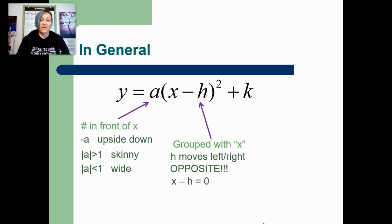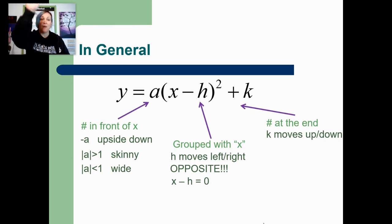Finally, we have the letter K, which will always be added or subtracted at the end of the problem after the square outside of the parentheses. And the letter K lets us know if the parabola moves up or down. So H and K are actually moving where the parabola exists. And then A is flipping it or making it wide or skinny. Okay, so that was just some general information that we went over during our live session.